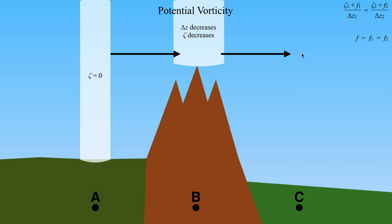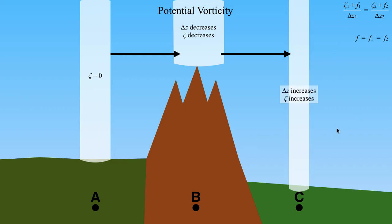As this column of air comes over point C, Δz increases again. To maintain the balance, whatever is on the left-hand side must equal the right-hand side — and at points A, B, and C the potential vorticity value should be the same. So if column depth is increasing, the numerator must also increase. Since f is constant, the only way to increase the numerator is to increase zeta. If we increase zeta, that means we develop a counterclockwise circulation, which implies the presence of a cyclone in the Northern Hemisphere.